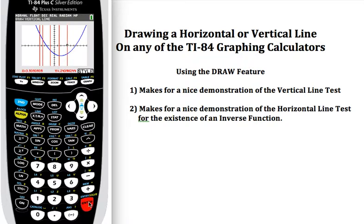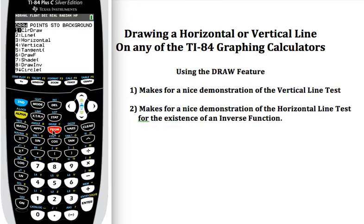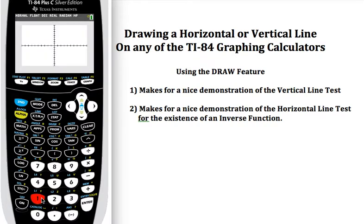Now let's say I wanted to erase those vertical lines because I was done. I can go back in. I can go second, draw, and my first one right there, clear draw, is going to clear my graph. It leaves my parabola, redraws the parabola, leaves it there, but then just clears all of those vertical lines that I was doing.